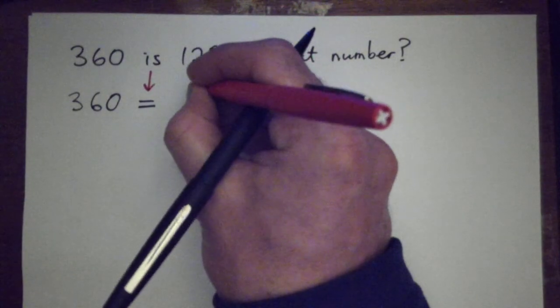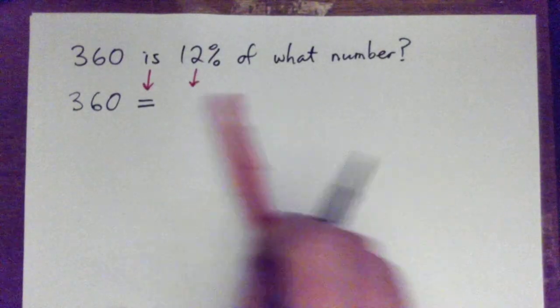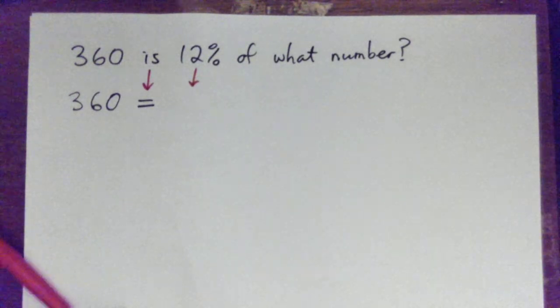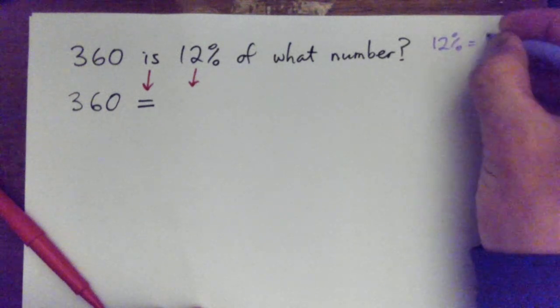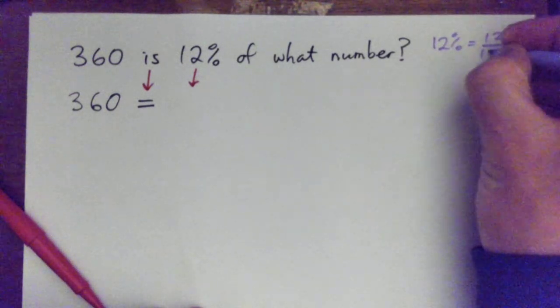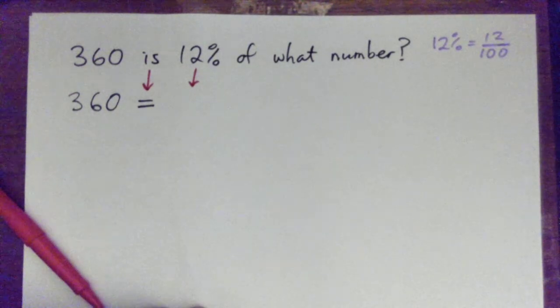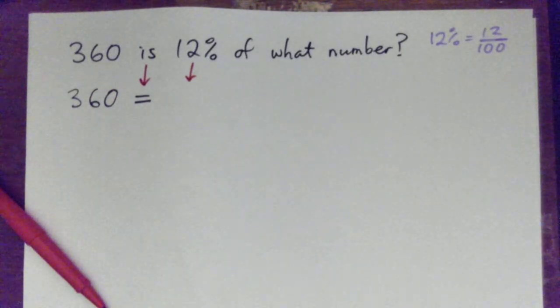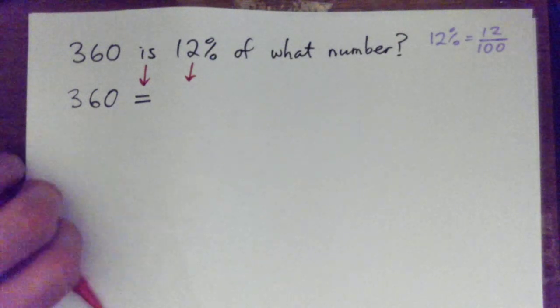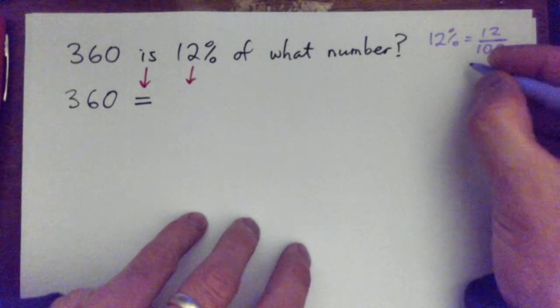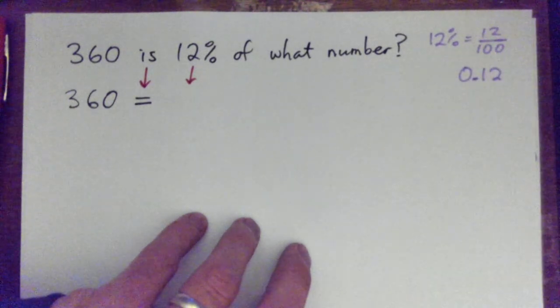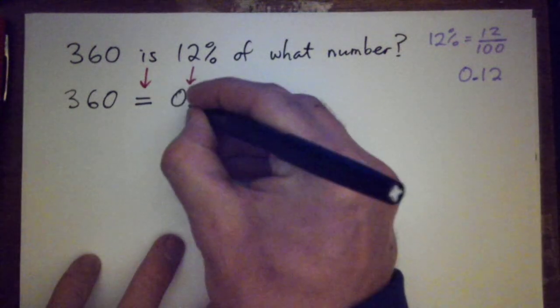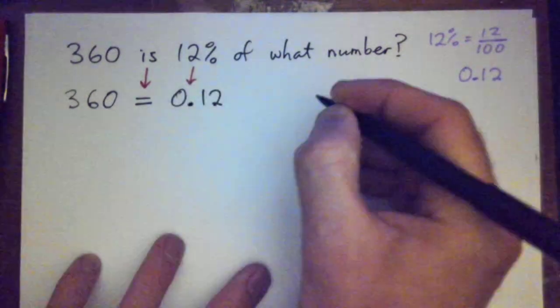So we can go 360, and then in place of 'is' we can write equals. And then for 12%, I want you all to turn that into a decimal. Now remember that 12% is 12 over 100, right? It's 12 percent - cent is like Latin for 100 - so it's 12 out of 100, so it's 12 hundredths or 12 cents. So as a decimal that's 0.12. We okay with that? We've turned that to a decimal, 0.12.